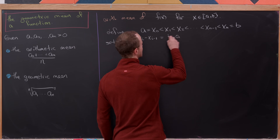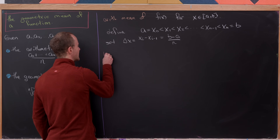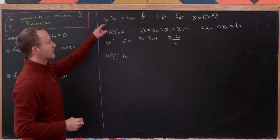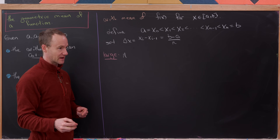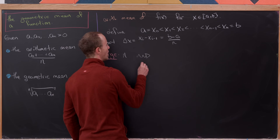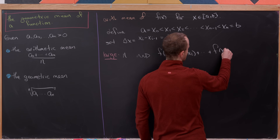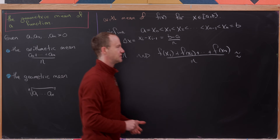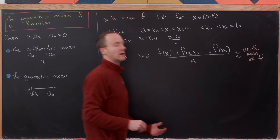So delta x equals b minus a over n. For a very large value of n, the arithmetic mean of f(x) should be closely approximated by the arithmetic mean of the function values at the partition points: (f(x1) + f(x2) + ... + f(xn)) / n, which for large n is approximately equal to the arithmetic mean of f on our interval.